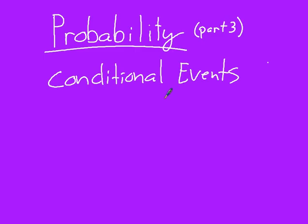In part three of probability, we're going to talk about conditional events. This is following up on the previous video of compound events, where we would have two events which could both occur — that was the 'and' — or either one could occur, which is the 'or'.